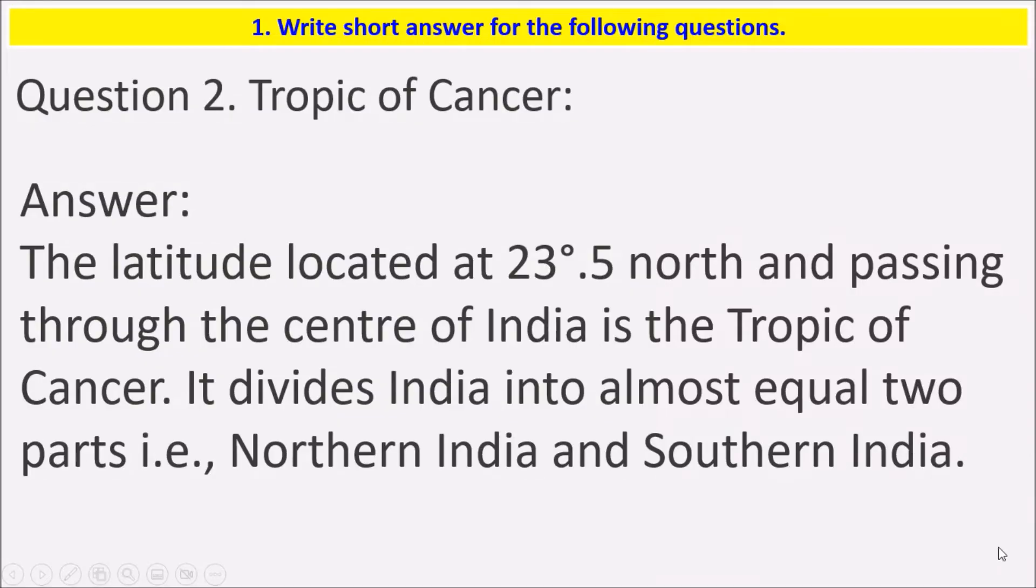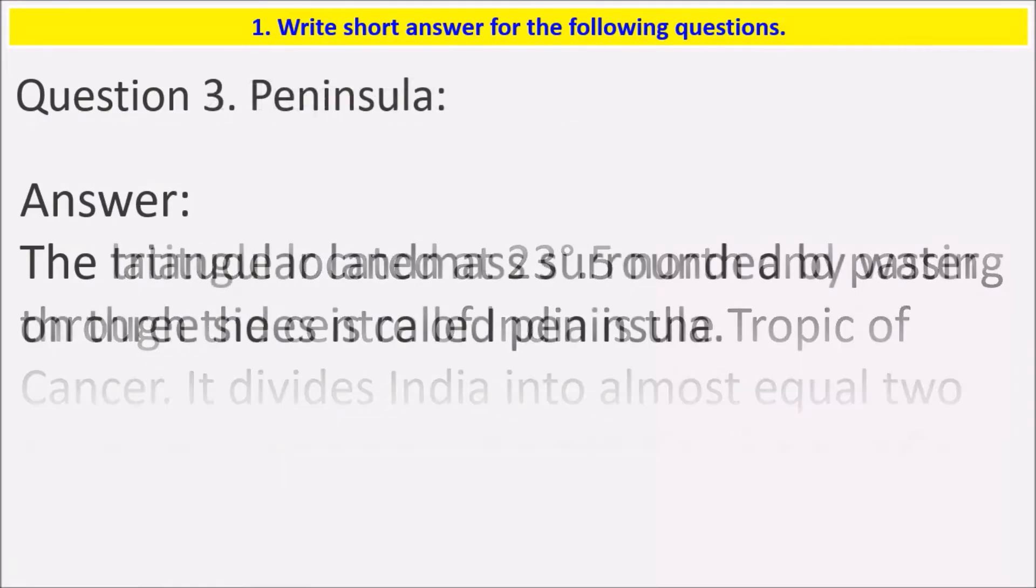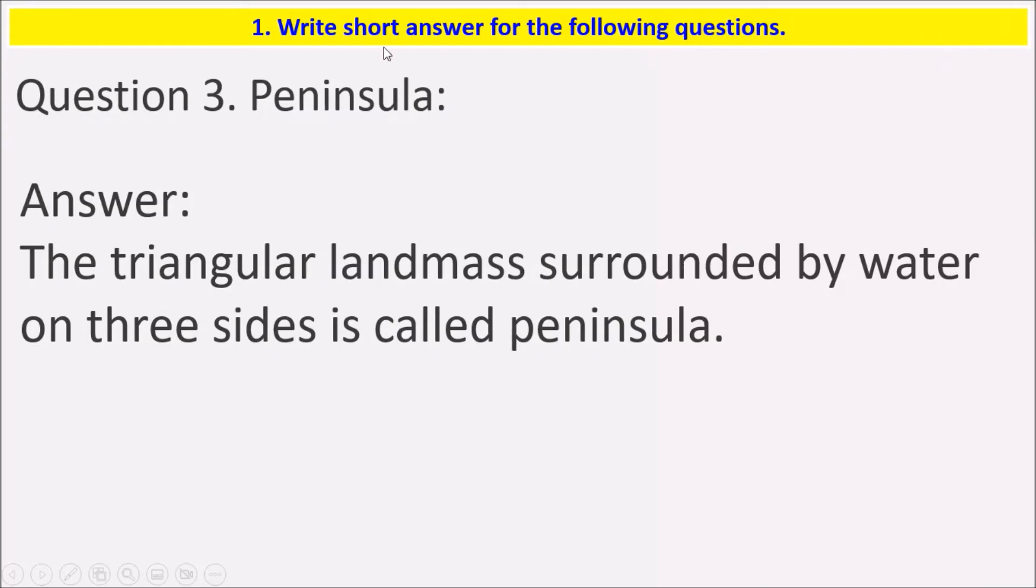Peninsula: The triangular landmass surrounded by water on three sides is called peninsula. If we see, India has a peninsula at the bottom. South of India is a peninsula because it is surrounded by water on three sides.